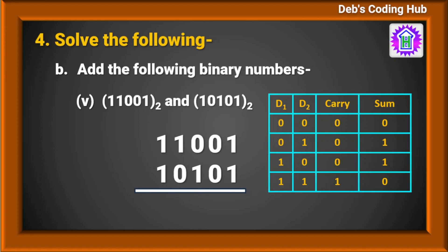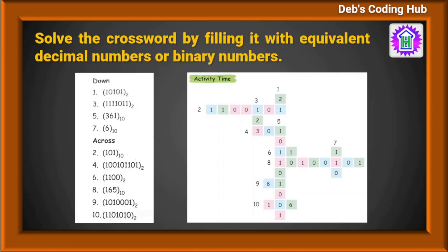Last one: add 11001 with 10101. Starting from the right: 1 plus 1 is 10 with carry 1. Then 1 plus 0 plus 0 is 1. Then 0 plus 1 is 1. Then 1 plus 0 is 1. And finally 1 plus 1 is 10. Hope you have understood. Let's jump to the next question which is a crossword and a solution is given. We will meet in the next video.